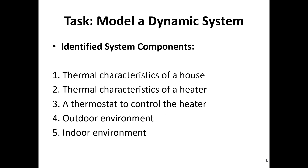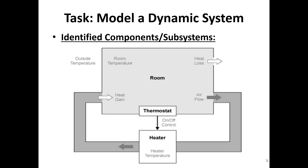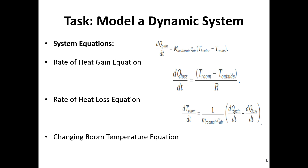These are the tasks needed to accomplish in modeling a dynamic system. First, we identify the system components, which include the thermal characteristics of a house, thermal characteristics of a heater, a thermostat that controls the heater, the outer environment, and the indoor environment. The identified components or subsystems are: room temperature, heat gain, heat loss, airflow, thermostat, heater, outside temperature, on-off control, and heater temperature.